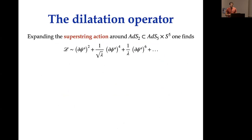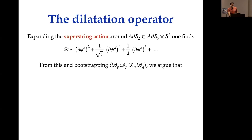From the AdS2 perspective, one can take the action of the superstring and expand around AdS2. Focusing on the five scalars phi, at order 1/sqrt(lambda) the first-order interaction is a phi-to-the-four vertex with derivatives; at order 1/lambda it is phi-to-the-six; at 1/lambda^(3/2) it is phi-to-the-eight, and so on. Importantly, at tree level there is only one vertex. From bootstrapping correlators at tree level and one loop, we argue that the dilatation operator at tree level can only connect degeneracy spaces with fixed length, while the second-order operator can change the length by at most two units.